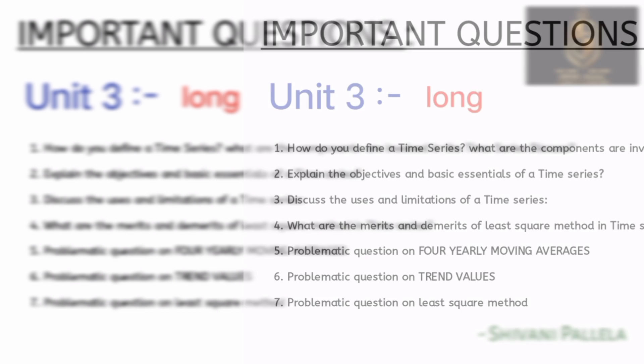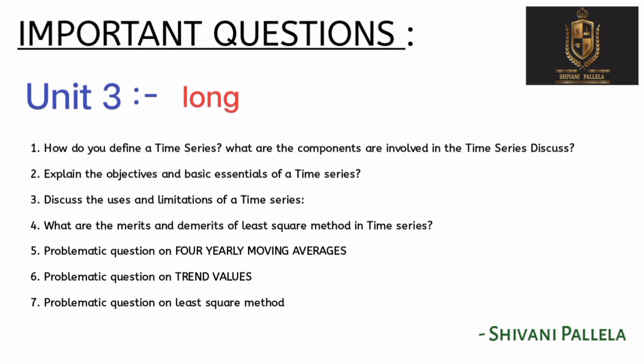Unit 3 long includes both theory and problematic. Theory important questions are covered, and another method is the 4-year moving average method. Unit 3 is also problematic — the least square method is problematic and has a 100% chance of appearing. Compared to theory, if you practice problematic well, you are perfect.